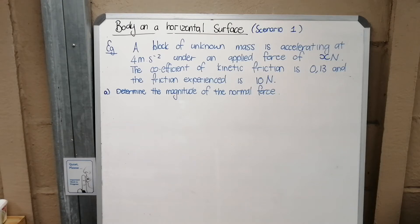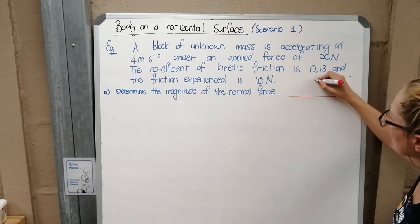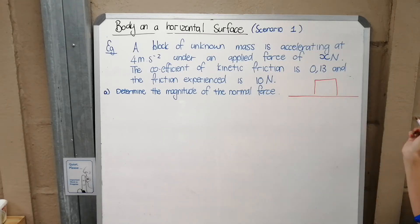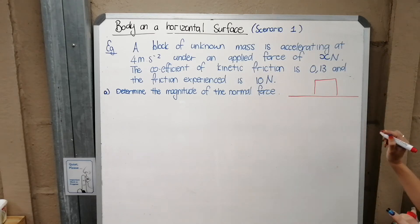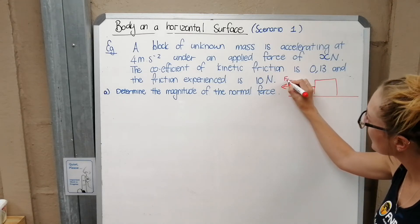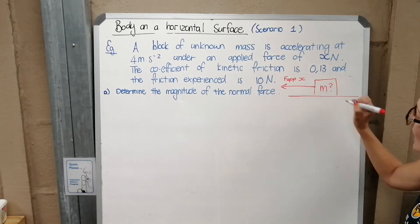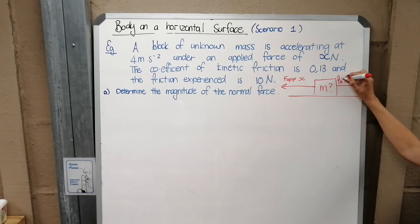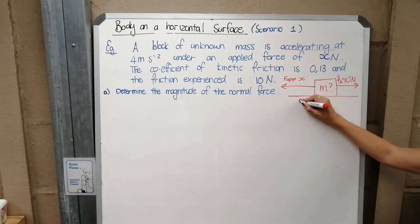Here's our example: a block of unknown mass accelerating at 4 m/s² under an applied force of x newtons. The coefficient of kinetic friction is 0.13 and the friction value is 10 newtons. Drawing the scenario: the block has an applied force x going left, kinetic friction of 10 N going right (opposing motion), and an acceleration of 4 m/s².